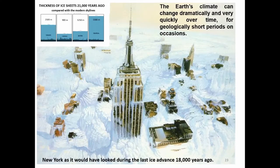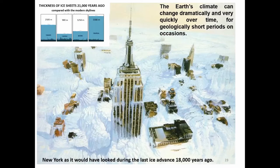The Earth's climate can change dramatically and very quickly over time. Here we have a reconstruction of how New York would have looked during the last ice advance 18,000 years ago. In the top left of the slide, we see the thickness of ice sheets 21,000 years ago superimposed over the skylines of Toronto, Chicago, Boston and Montreal. We can see from these depictions that ice sheets of well over a kilometre were not uncommon in North America.